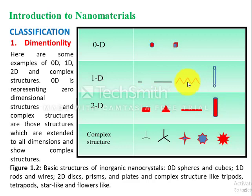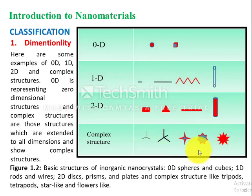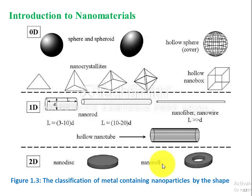Two-dimensional materials have nanoscale size along two dimensions — these are shaped like disks or plates extending along the x-axis or y-axis. There are also complex nanostructures that are either three-dimensional or condensed three-dimensional structures — these include helix shapes, straw-like structures, and tetrahedral structures. All of these are classified as three-dimensional nanomaterials.